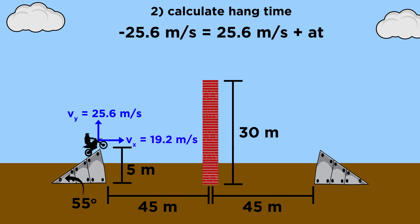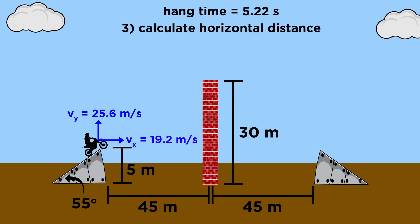So we can plug in twenty-five point six for v initial, and negative twenty-five point six for v final. We also know the acceleration due to gravity, so we combine these velocities, divide by the acceleration, and we get five point two two seconds for the hang time.